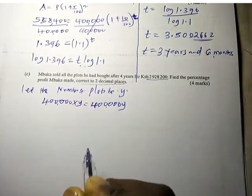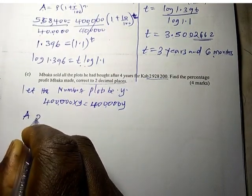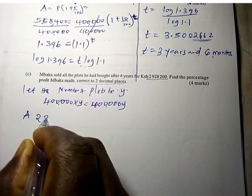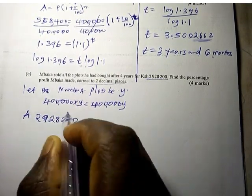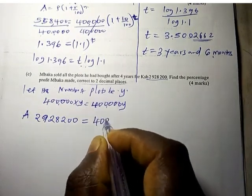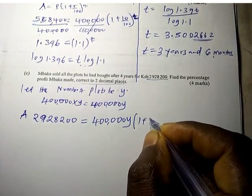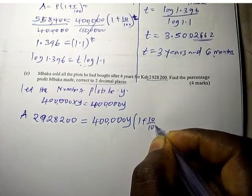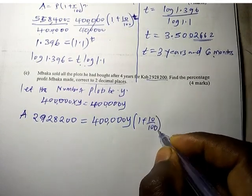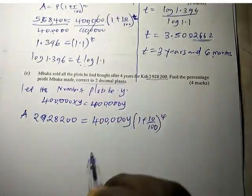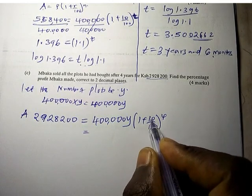That is the principal now he has. So amount, we have amount is 2,928,200, which equals the principal 400,000Y times 1 plus 10 over 100 to the power of 4. It is 4 years. This is 1.1.